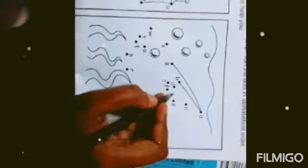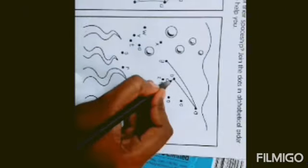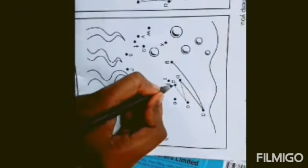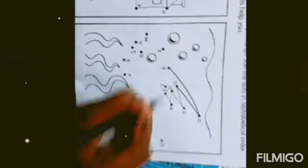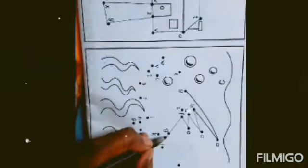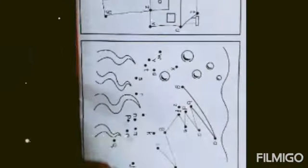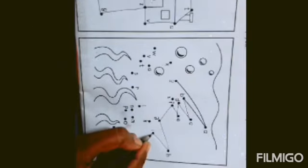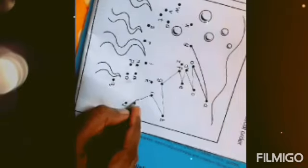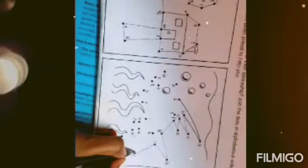Now we shall do this one. A, B, C, D, E, F, G, H, I, J. Where is J? Yes. K.